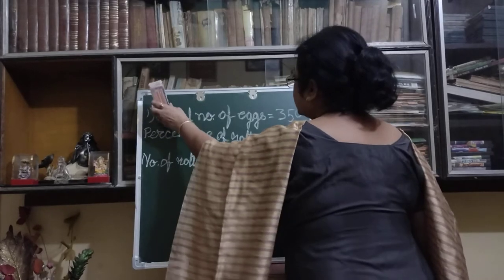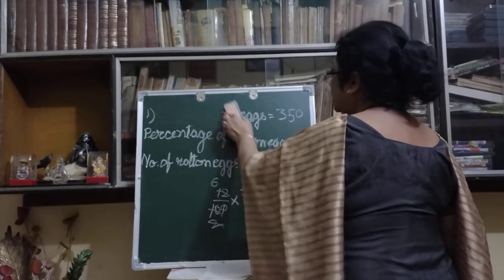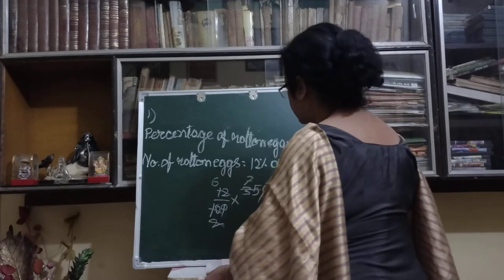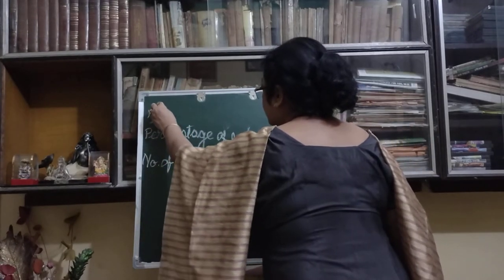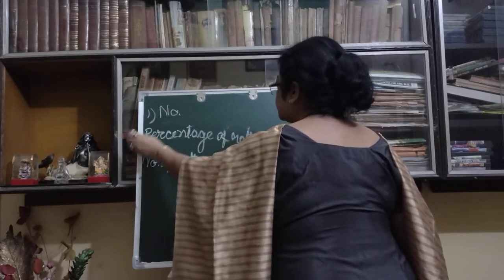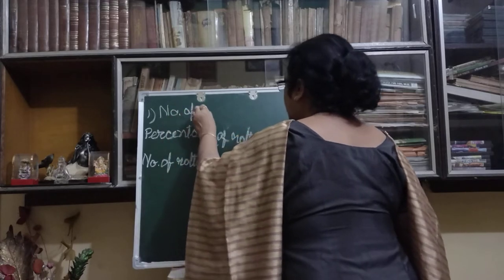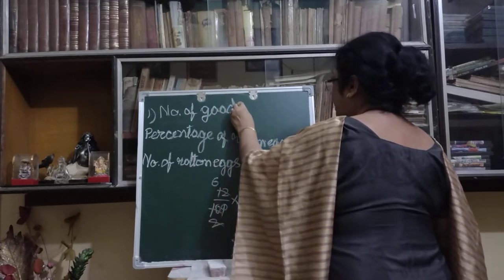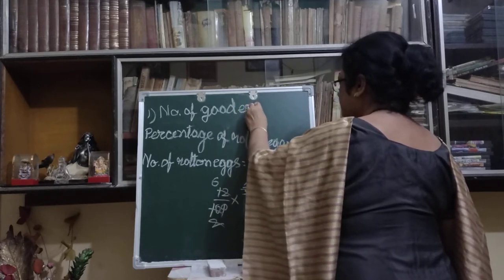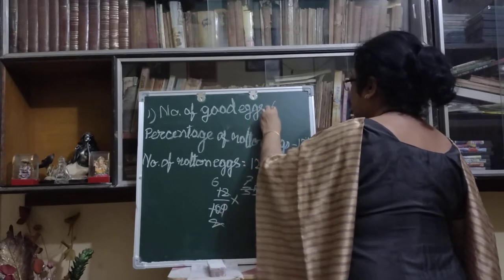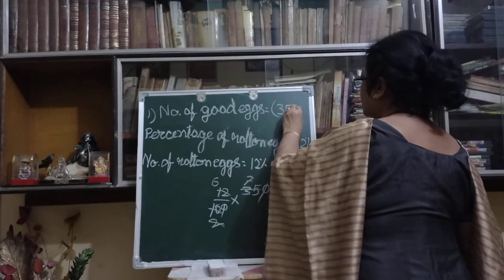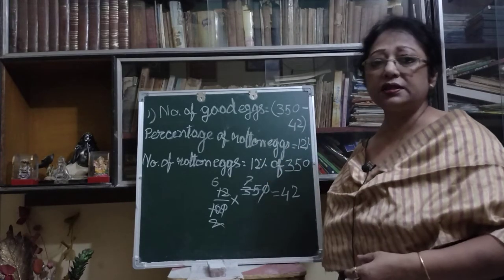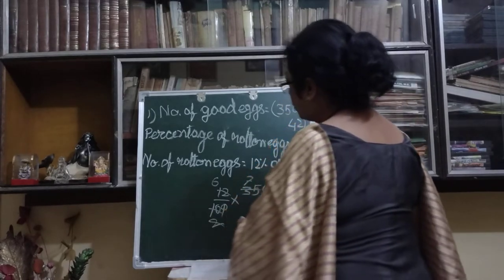Now we find the number of good eggs — the sellable eggs the shopkeeper can sell. Number of good eggs = 350 − 42. If you subtract, you will get the answer.